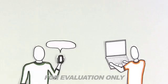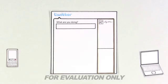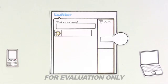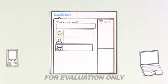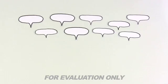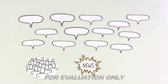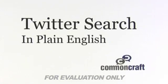It seems like everyone is using Twitter these days, sharing little messages with each other on phones and computers. It turns out that all these little messages, if you look at them all at once, become an easy way to find people, news, and trends. This is Twitter Search in Plain English.